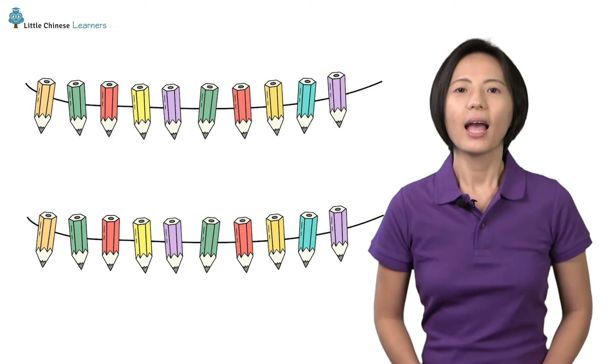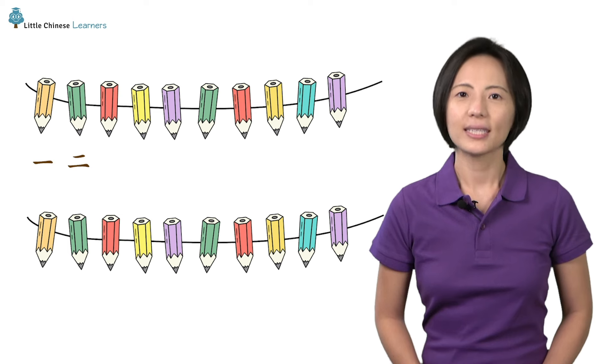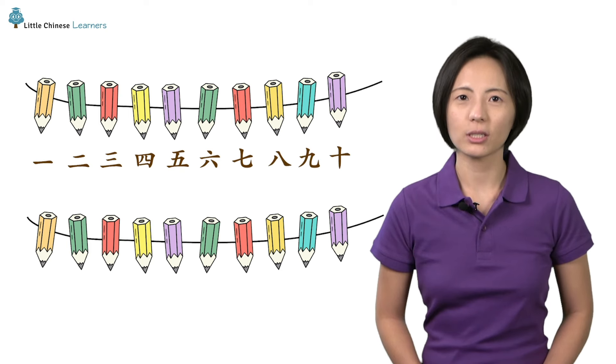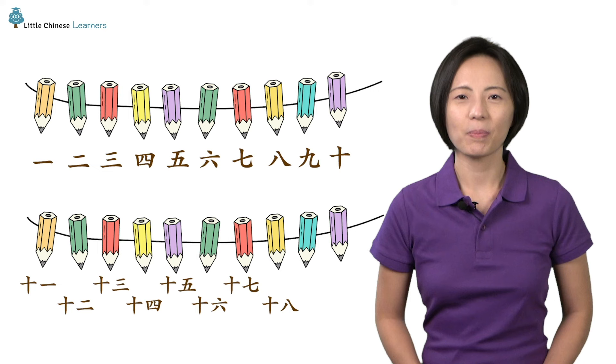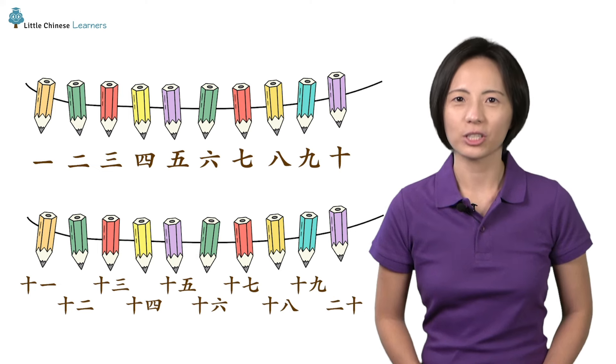Just like that, you have mastered Chinese numbers. Let's try counting from 1 to 20 together. 一, 二, 三, 四, 五, 六, 七, 八, 九, 十, 十一, 十二, 十三, 十四, 十五, 十六, 十七, 十八, 十九, 二十. 你真棒!